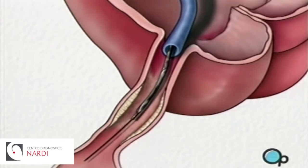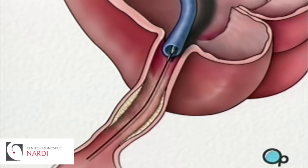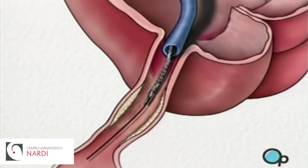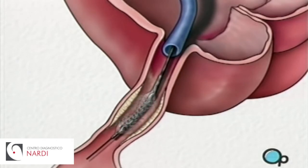The balloon catheter is then withdrawn and another balloon catheter is inserted. This balloon has the mesh stent tube wrapped around it. Once this tube has been placed in the center of the now widened area of the artery, the balloon is briefly inflated. The stent expands until it hugs the walls of the artery.